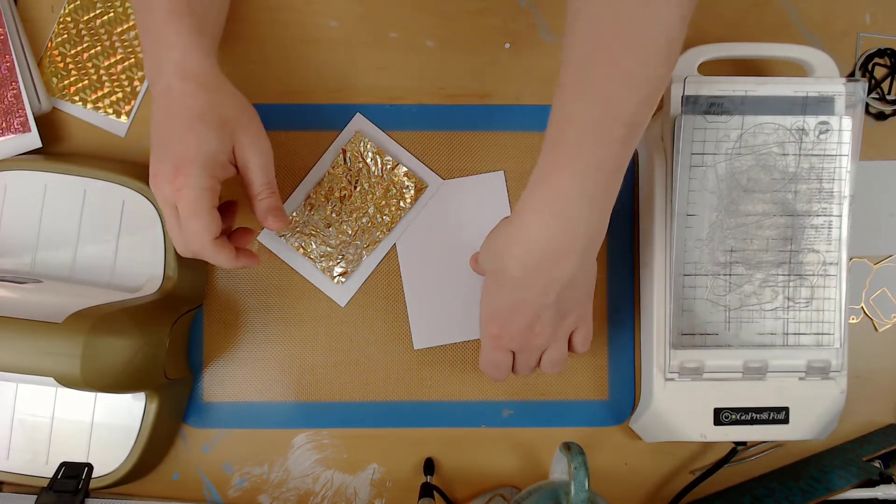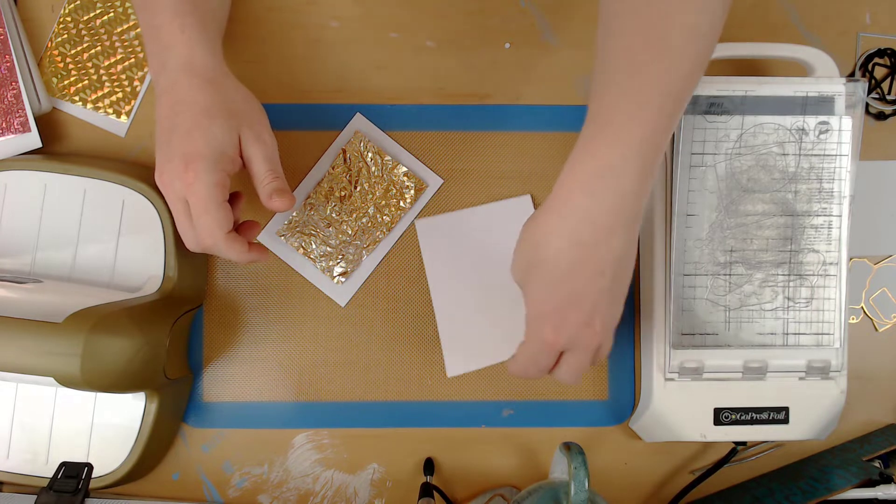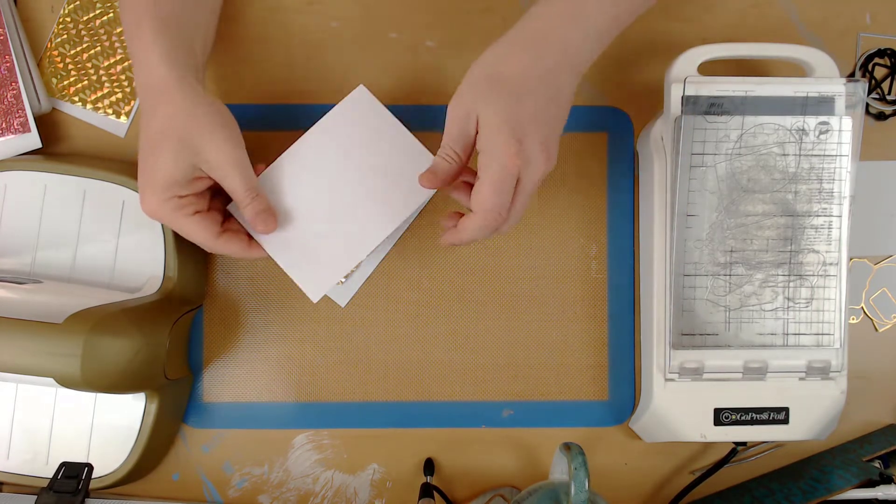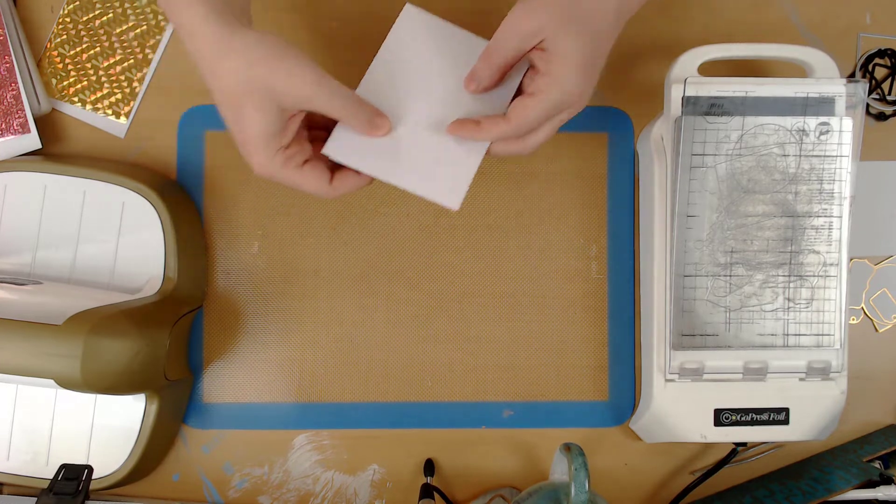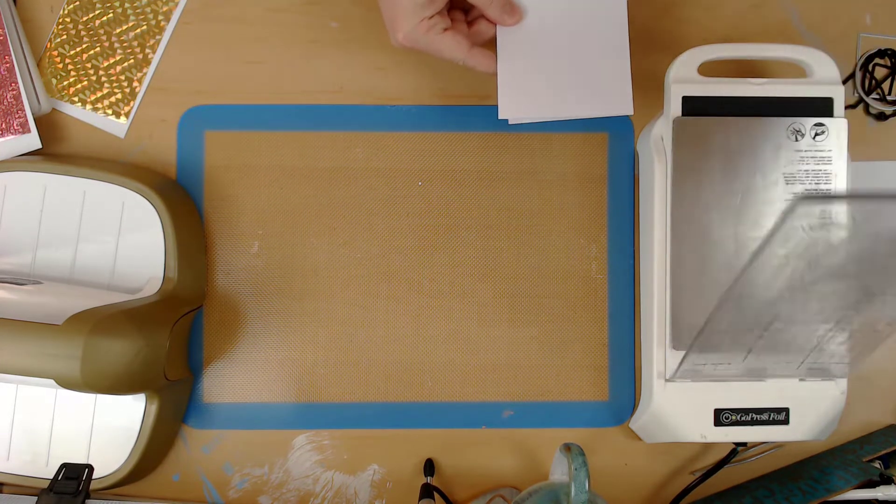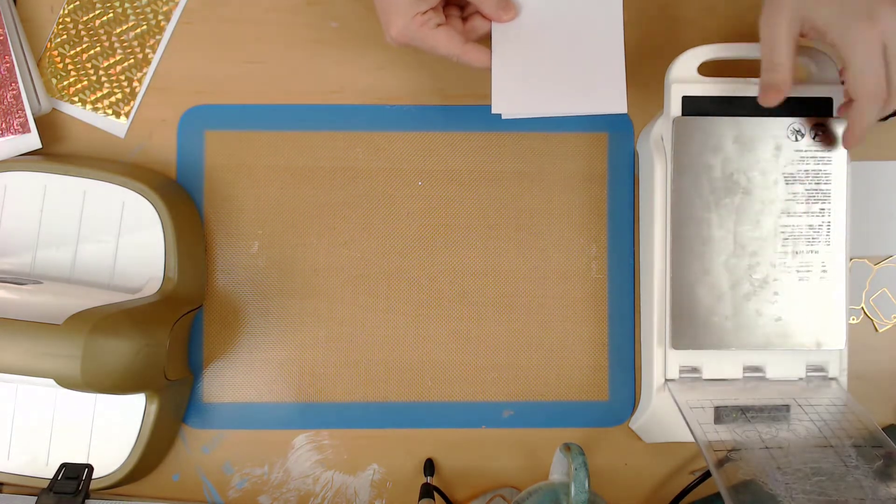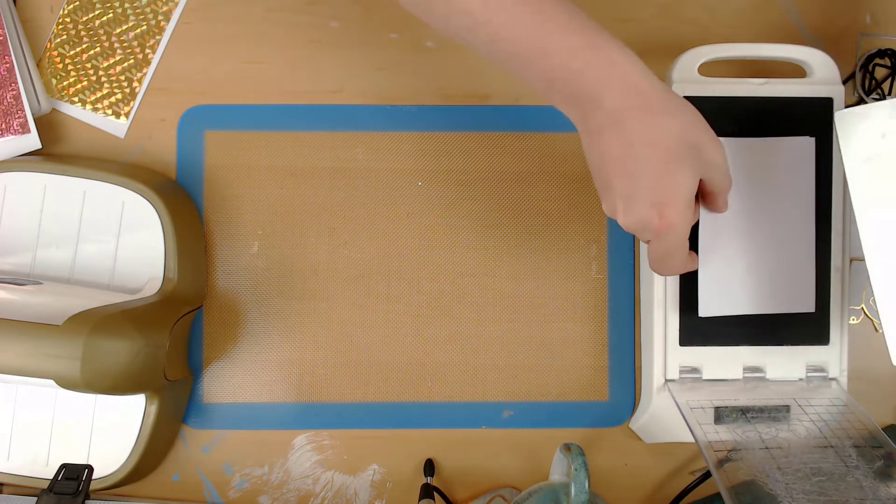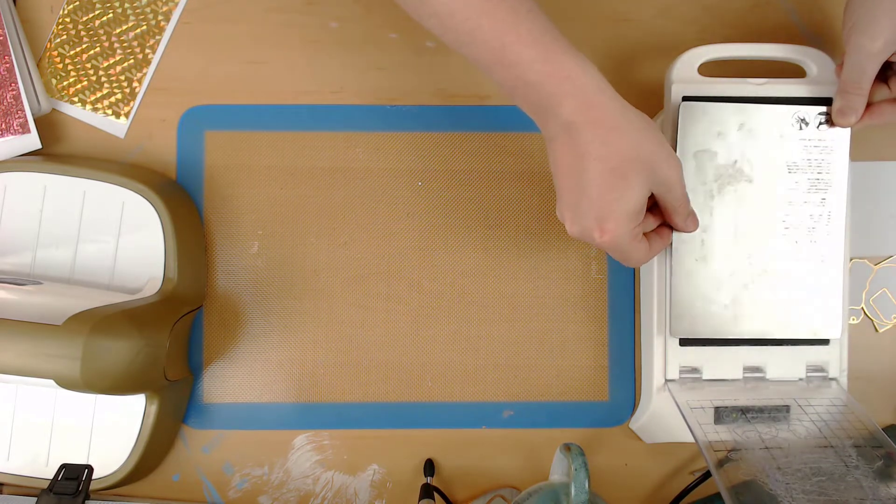Now we're going to position that with the adhesive side faced down onto a piece of card, and then we'll position another piece of card on top of that. They are going to go into my Go Press and Foil machine underneath the thick metal shim.